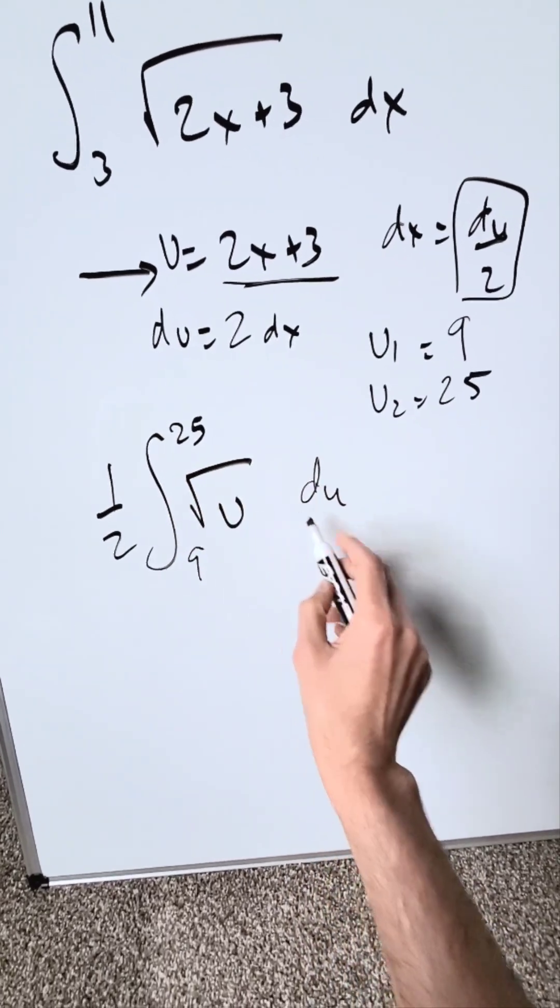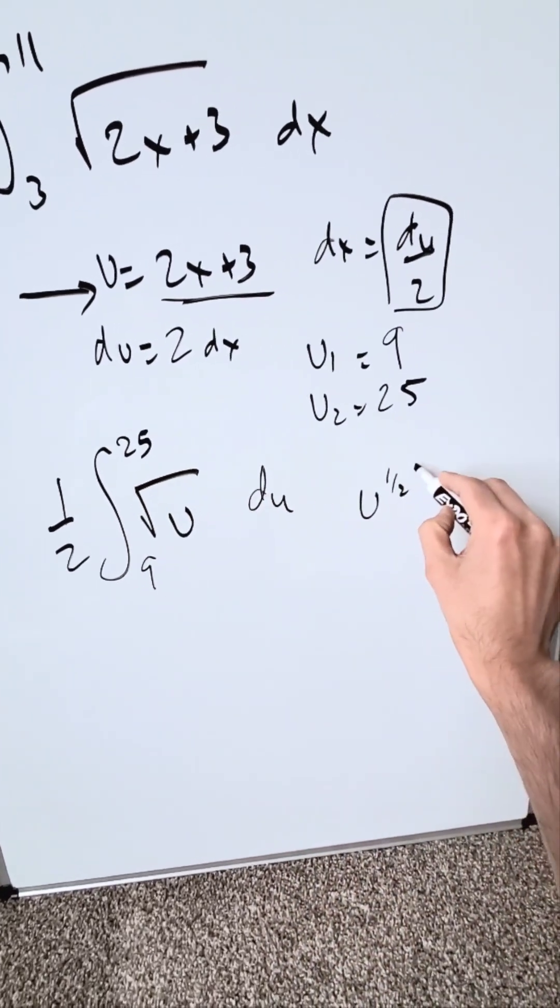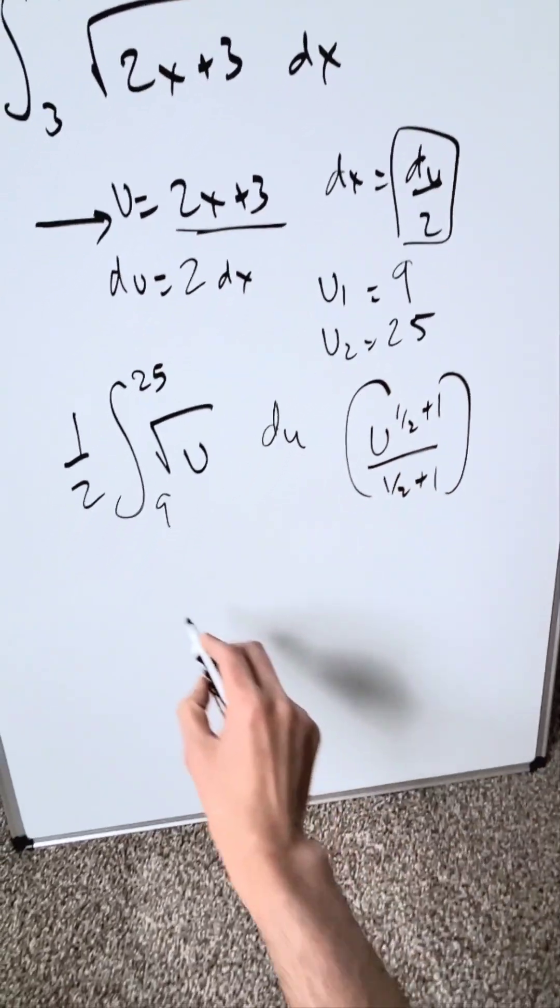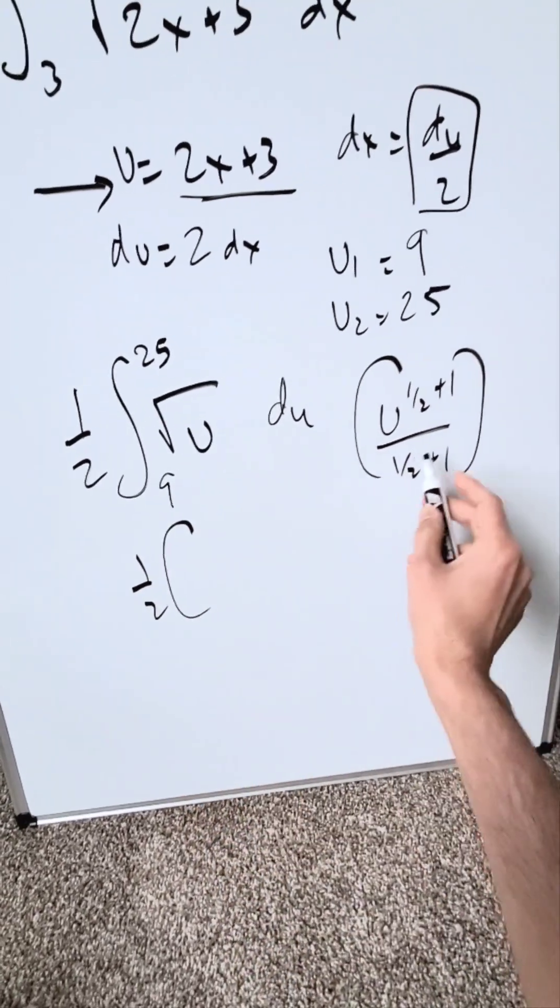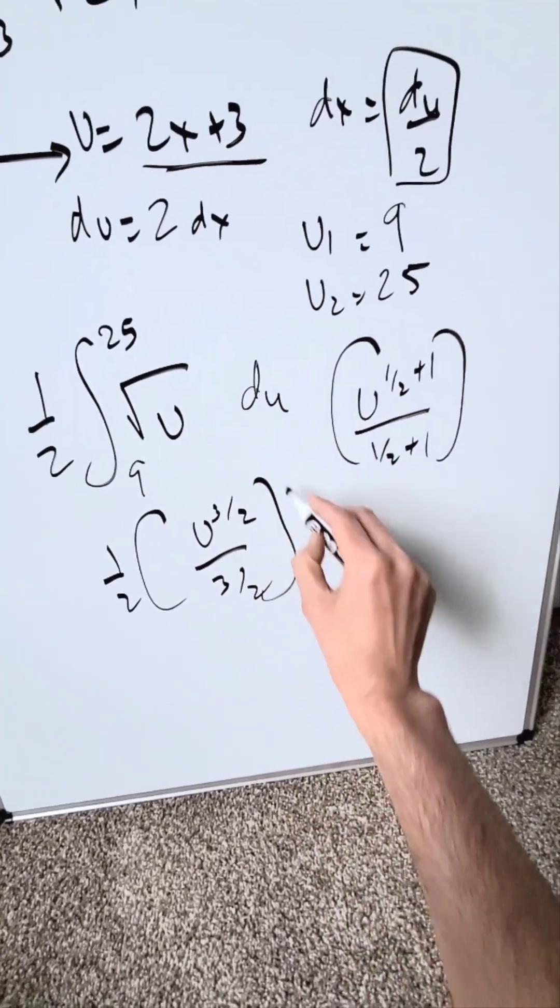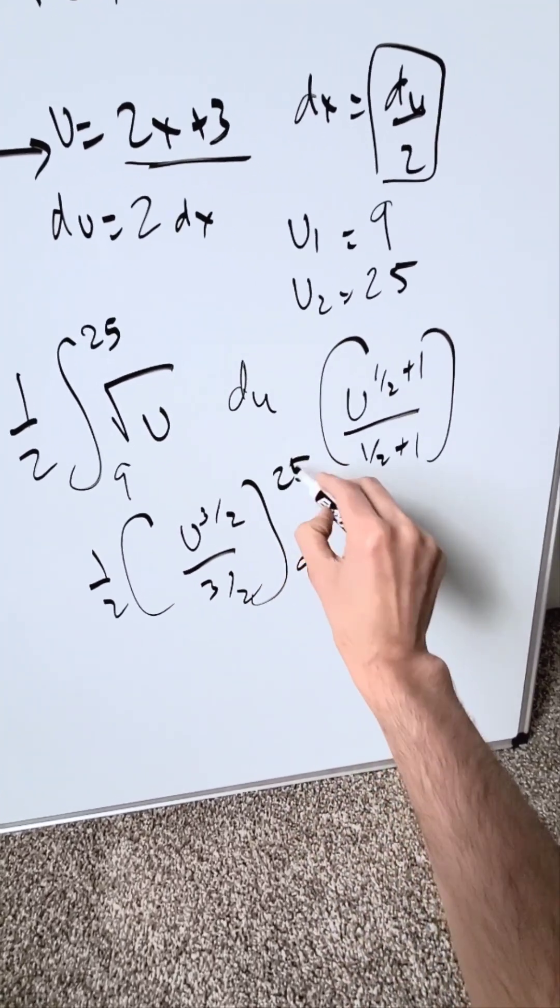You know this right here is u to the power of 1 over 2. u to the 1 over 2 plus 1 divided by 1 over 2 plus 1 is your anti-derivative. You will have here a 1 over 2 sitting outside. Then I have a u to the 3 over 2 over 3 over 2. Everything here with the limits 25 and 9.